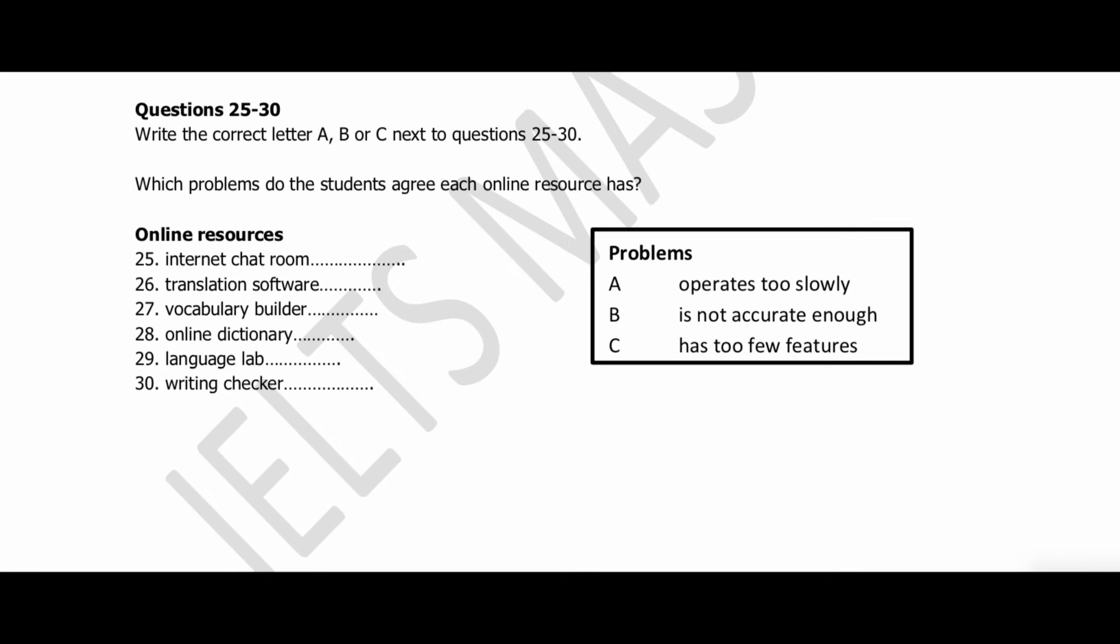How have you been finding the free online resources we've been given access to? I found one or two of them useful, but some of them aren't as exciting as I'd expected them to be. Right. I tried the chat room the other day for the first time. You know, where you can make contact with real Chinese speakers and practice your language skills. I was chatting to a really helpful user called May. The connection was pretty poor, though, and I gave up in the end. I don't know whether it's always like that. I had a similar experience waiting ages for replies to come through.